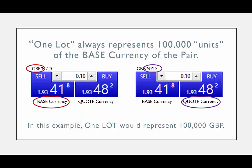Each currency pair has a base currency and a quote currency. The base currency is always listed first in the pair name. So in this case, the GBP, or Great British Pound, is the base currency, and the New Zealand Dollar is the quote currency.